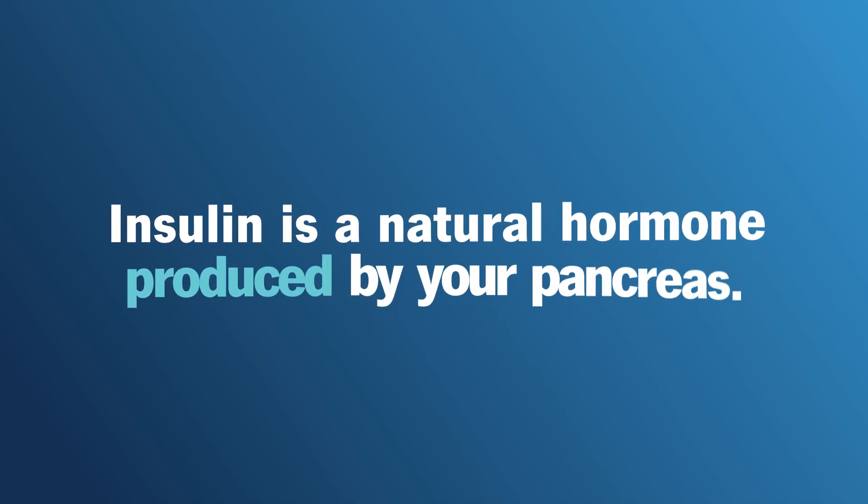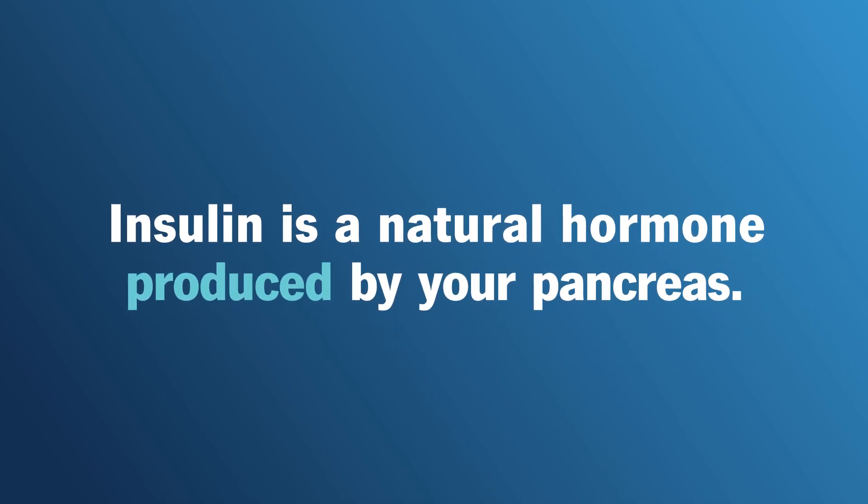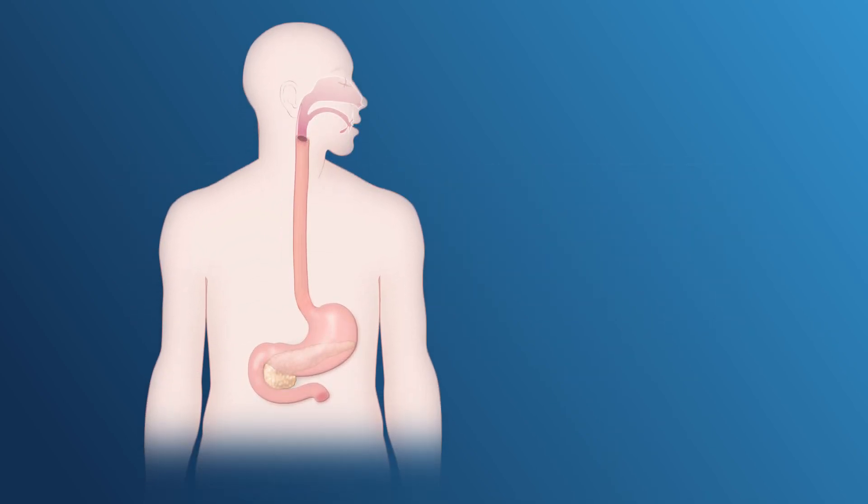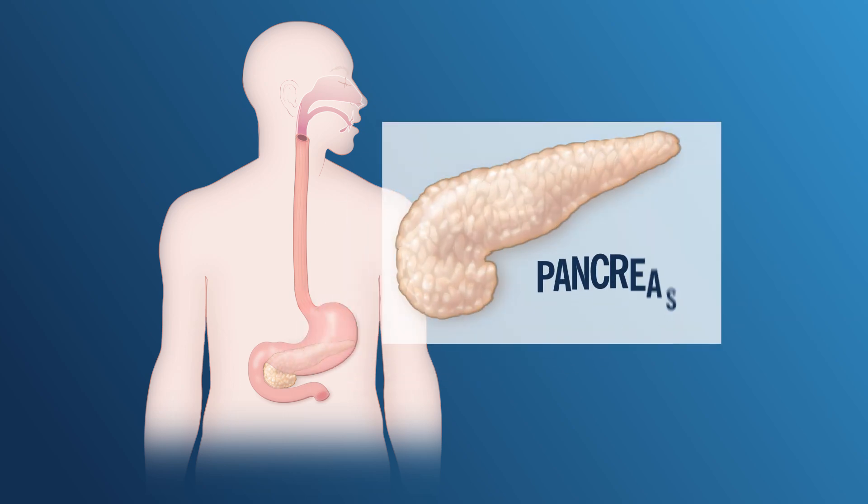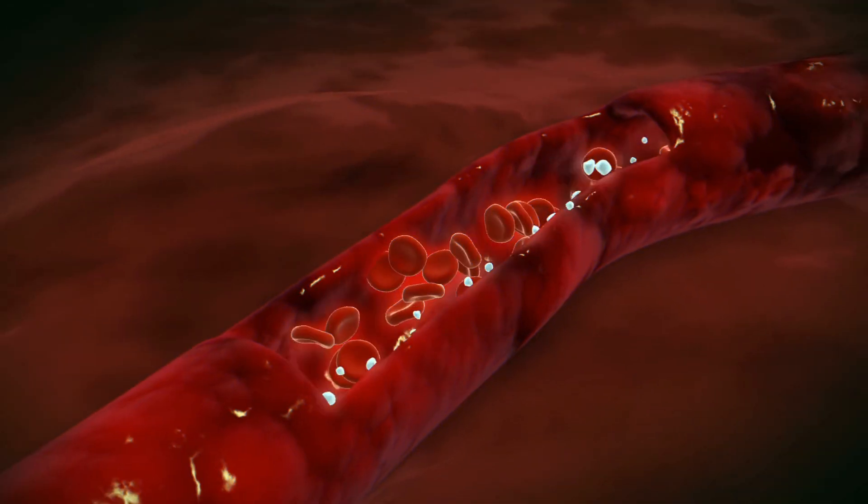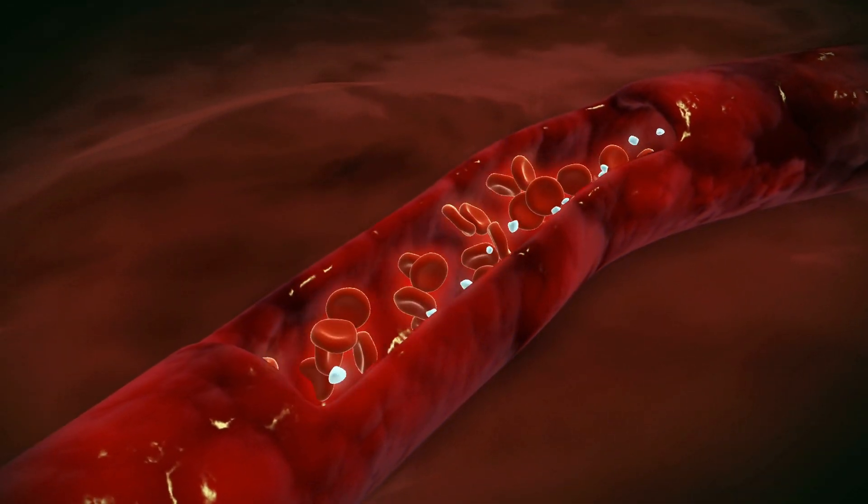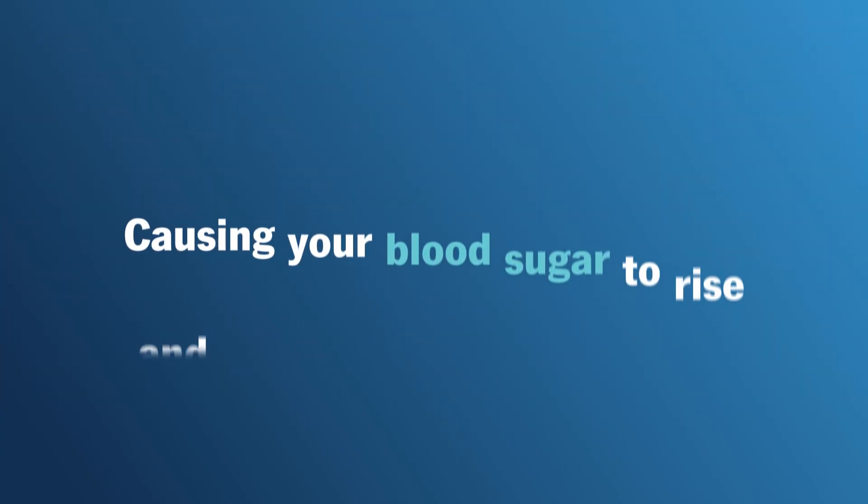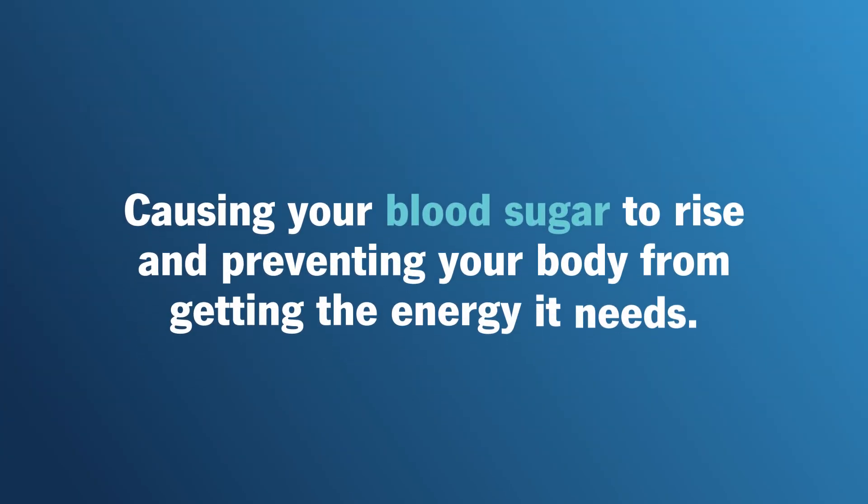Insulin is a natural hormone produced by your pancreas, but when you have type 1 diabetes, your immune system attacks your pancreas, disrupting its ability to produce insulin. Without insulin, glucose remains stuck inside your bloodstream, causing your blood sugar to rise and preventing your body from getting the energy it needs.